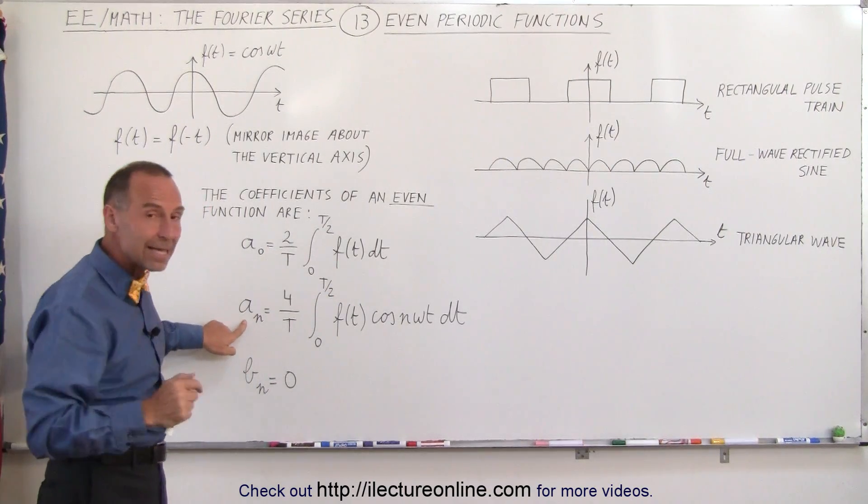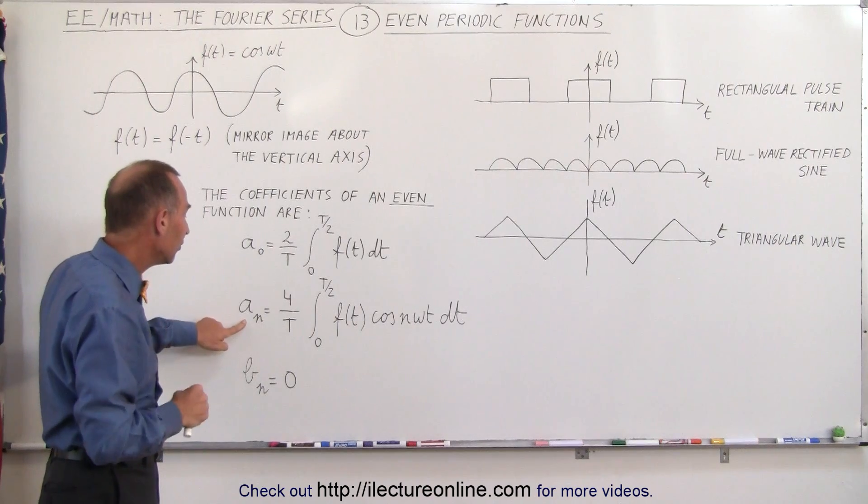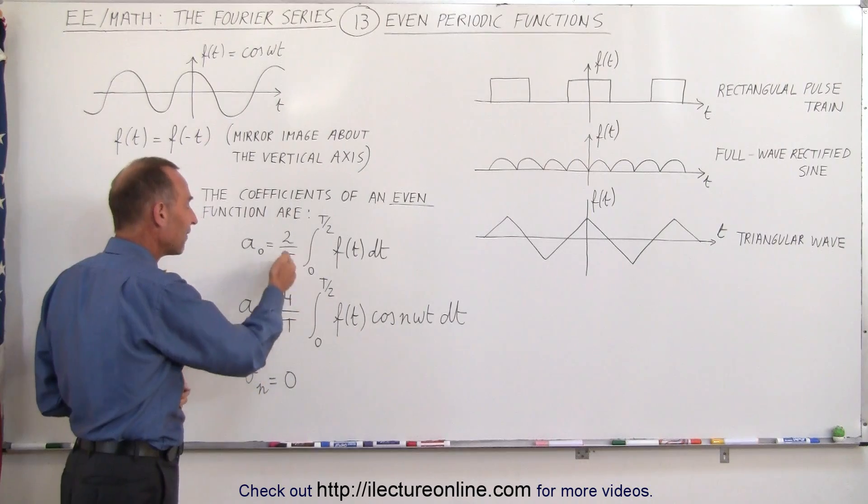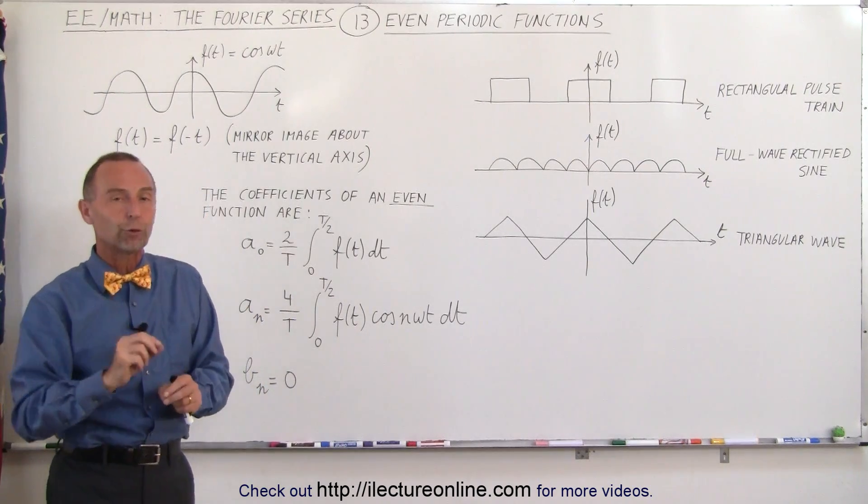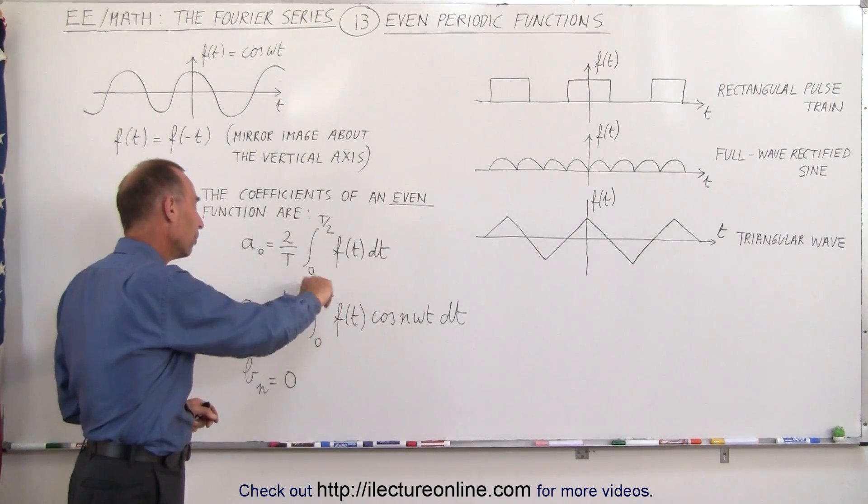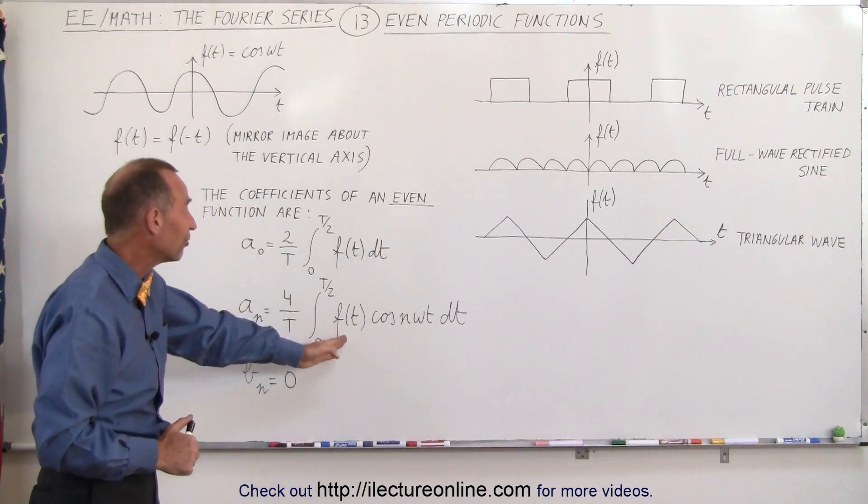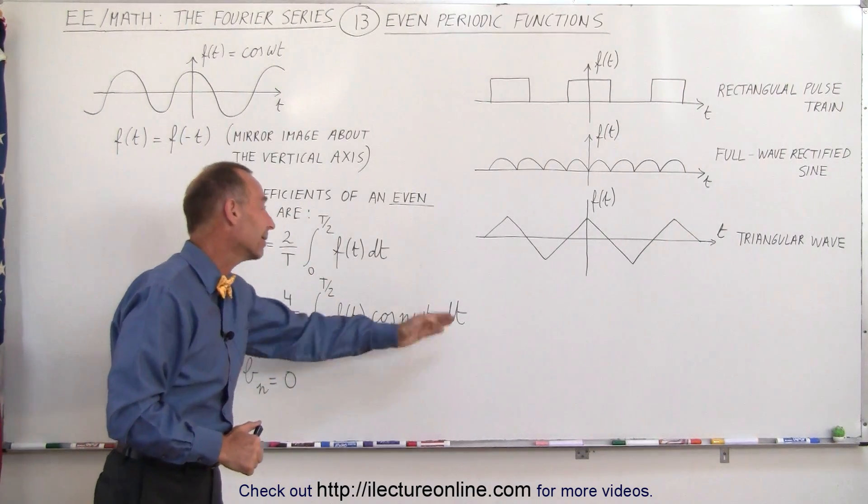When we find the aₙ's, again, we only have to integrate from 0 to half the period, but instead of having 2 over T there, we now have 4 over T. We double the amplitude, but we only integrate over half the period. The rest is the same: f(t) times the cosine of nωt dt.